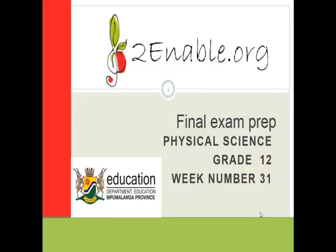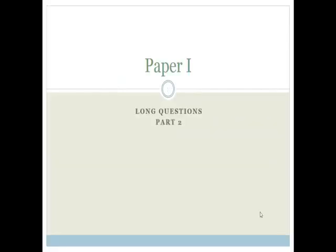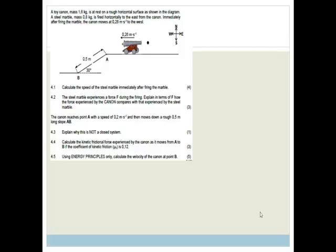Good day, Great Tools. Welcome to this next lesson. We're carrying on with looking at long questions from the physics paper. It says a toy cannon, mass 1.6 kilograms, is at rest on a rough horizontal surface as shown in the diagram.